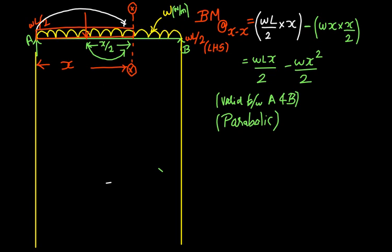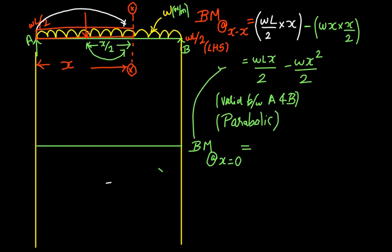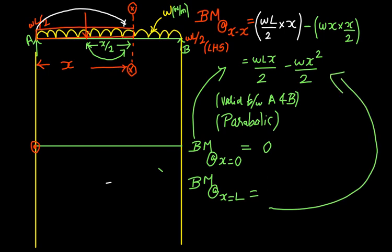Let me plot the bending moment diagram. At the left extreme, when X equals zero, the bending moment is zero. At the right extreme, putting X equals L gives WL squared over 2 minus WL squared over 2, which is also zero. So the bending moment is zero at both supports, which makes sense for a simply supported beam.